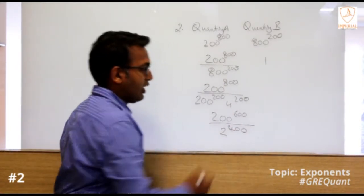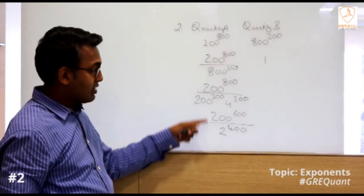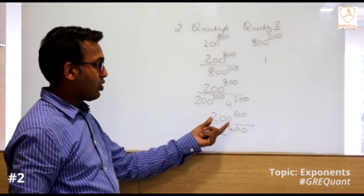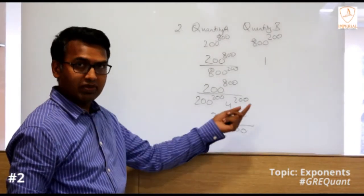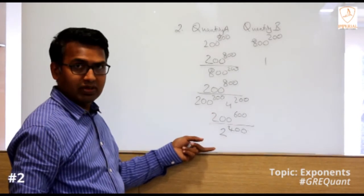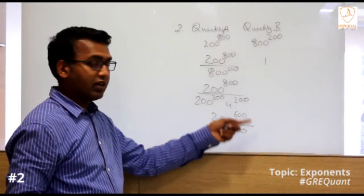Now as you can clearly see, this is a very big number - 2 power 600 times 100 power 600. And if you simplify, you'll clearly see that this quantity is a very big number compared to 1.